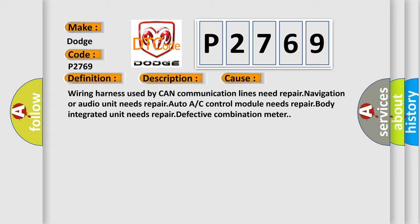This diagnostic error occurs most often in these cases: Wiring harness used by CAN communication lines need repair, navigation or audio unit needs repair, auto A/C control module needs repair, body integrated unit needs repair, defective combination meter.